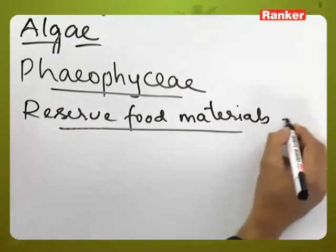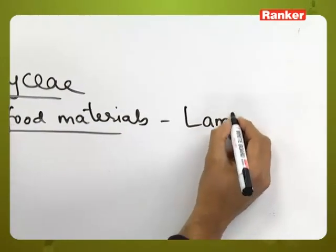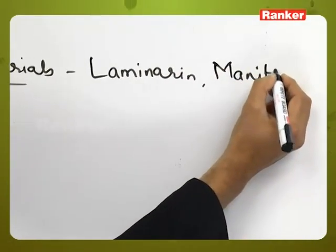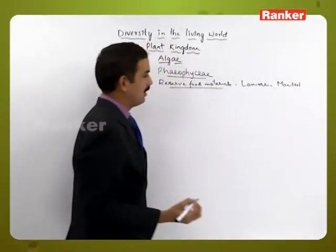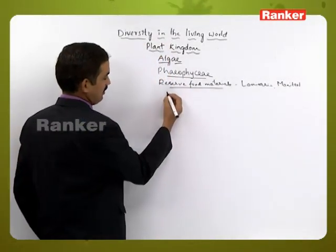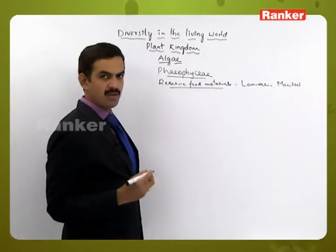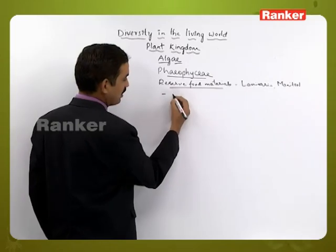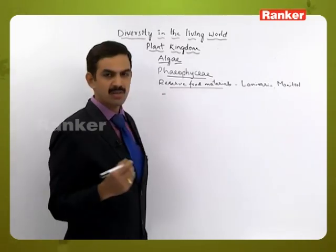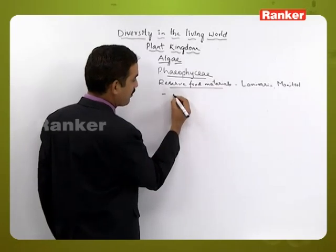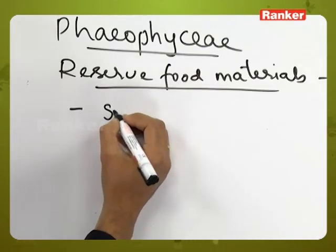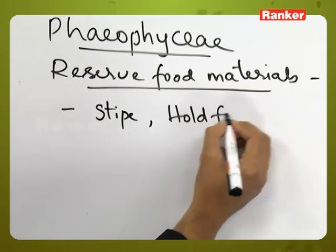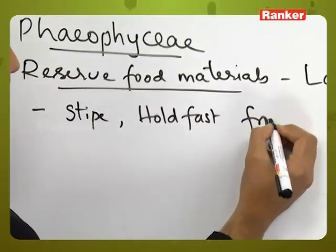The reserve food materials are stored in the form of laminarin and mannitol. Phaeophyceae members have a multicellular structure, and some will have a massive body as well. The body is divided into three parts: the holdfast, the stipe, and the frond.